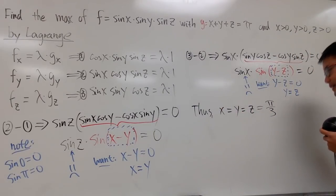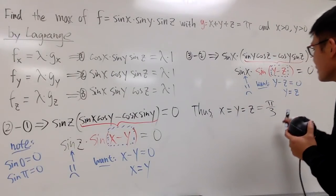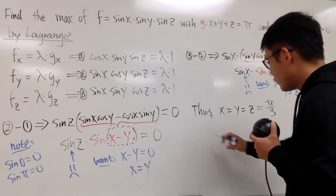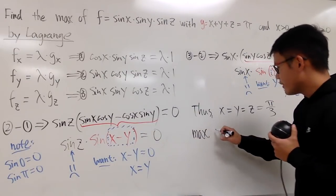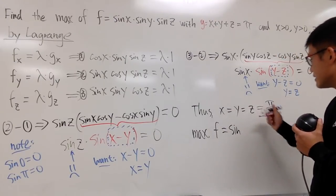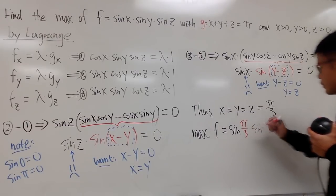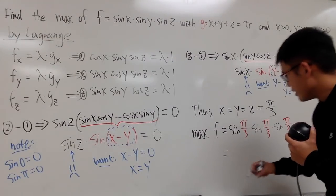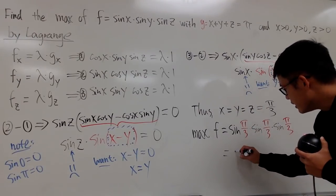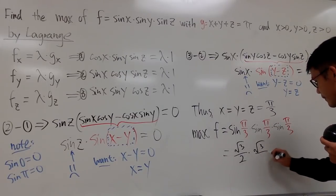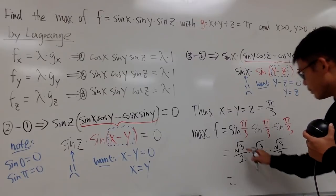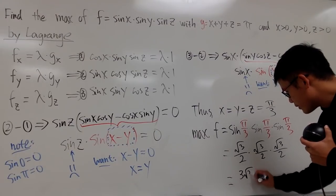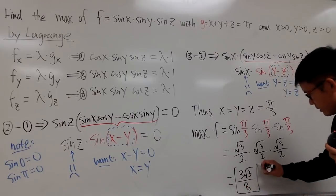This is the only critical number, so we plug back into the original function. The maximum value of f is sin(pi/3) times sin(pi/3) times sin(pi/3). Sine of pi over 3 is square root of 3 over 2. So we get (√3/2)³, which equals 3√3 over 8. That is the maximum value.